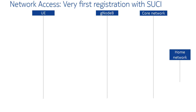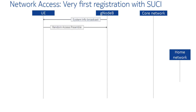Let's start with the very first registration, typically when a new subscriber turns on a smartphone with a brand new SIM card. The gNB sends out a system information broadcast, which allows the user equipment to detect the gNB.